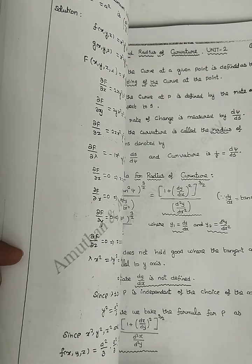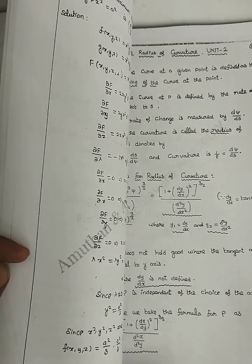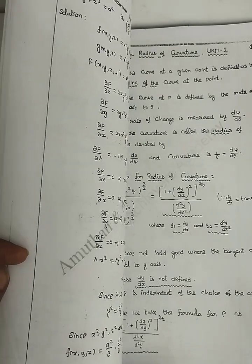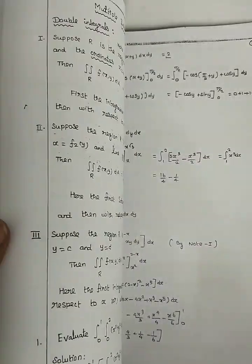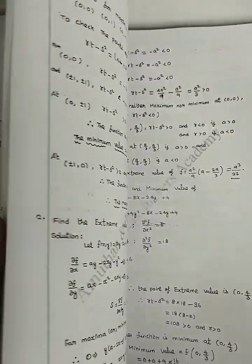In another part, we will talk about evaluators, double integrals, beta and gamma functions, radius of curvature, functions of several variables including Jacobians. This covers unit two.